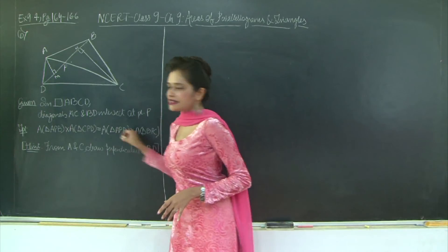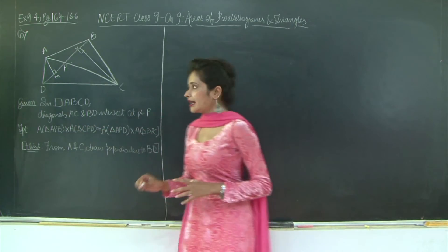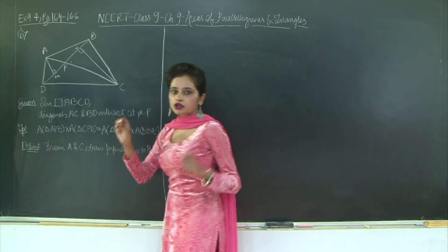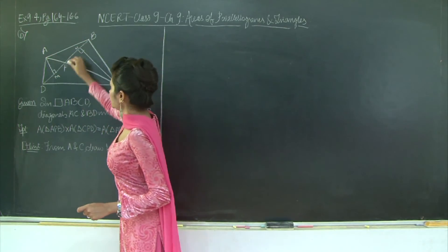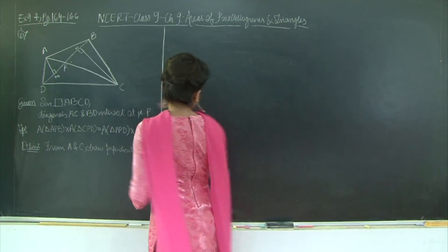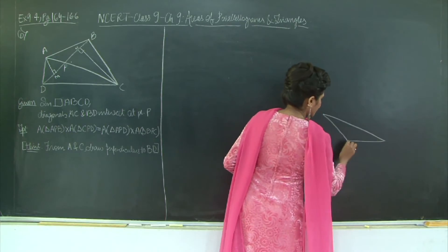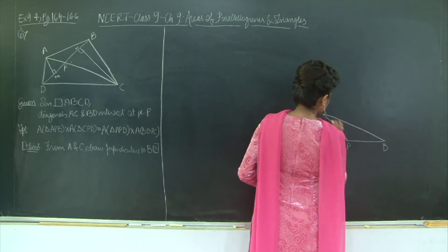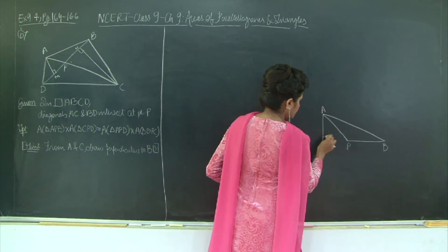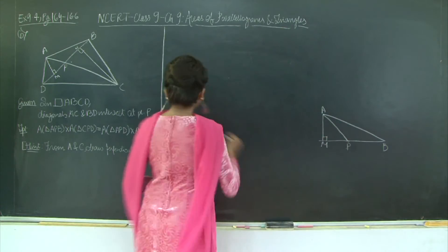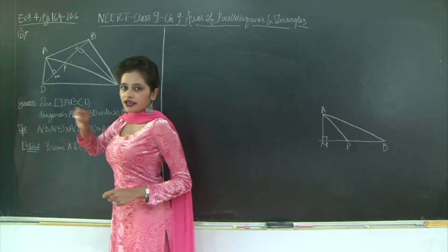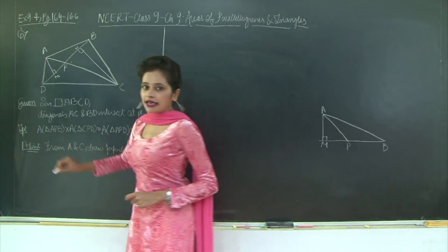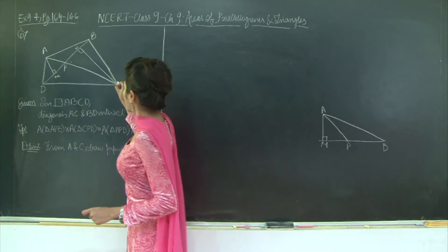Now proving this is pretty simple. For triangle APB, taking BP as the base, the area of a triangle is given by half into base into height. So area of triangle APB is half into base BP into height AM. Similarly, area of triangle CPD is half into base PD into height CN.